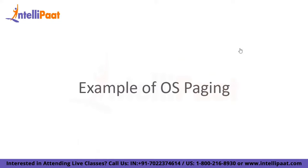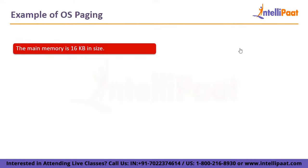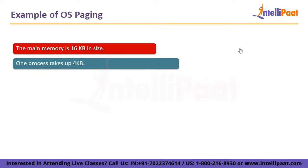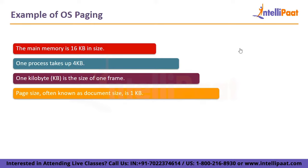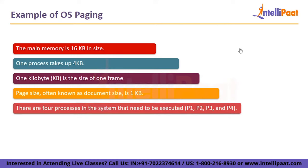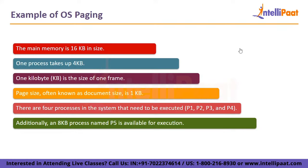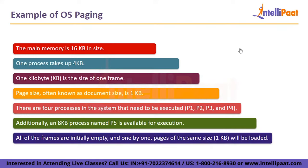Let's look at an example of operating system paging. Consider the following: main memory is 16 KB in size, one process takes up 4 KB, one frame is 1 KB in size, and the page size is also 1 KB. There are four processes — p1, p2, p3, and p4 — that need to be executed, and an 8 KB process named p5 is also available. All frames are initially empty and pages of 1 KB will be loaded one by one.